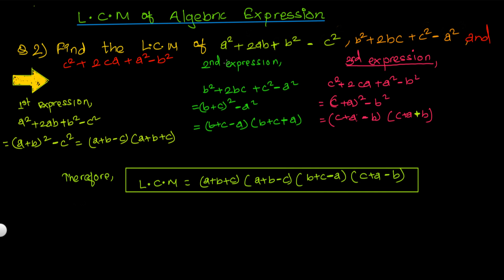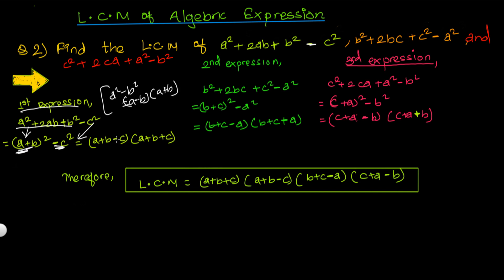Let us see one more example: find the LCM of three expressions. The first is a² + 2ab + b² − c², the second is b² + 2bc + c² − a², and the third is c² + 2ca + a² − b². The first expression has (a + b)² − c², which is a difference of squares giving (a + b − c)(a + b + c).